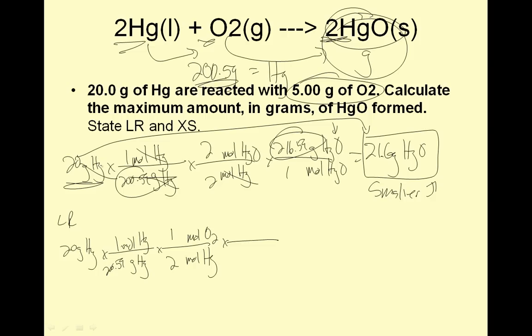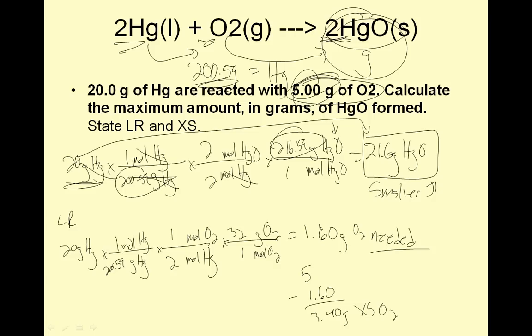I can't go right into grams of O2. I first have to go into moles of O2. Moles over moles use coefficients, 1 and 2. Then 1 mole of O2 is 32 grams. This tells me how much the limiting reactant needs. 20 divided by 200.59, divided by 2 times 32, is 1.60 grams of O2 needed. How much do I have? I have 5. 5 minus 1.60 is 3.40 grams excess O2, because that's how much is left over.